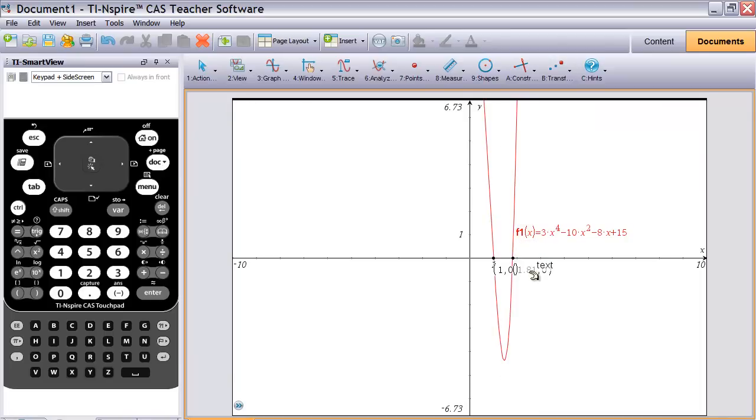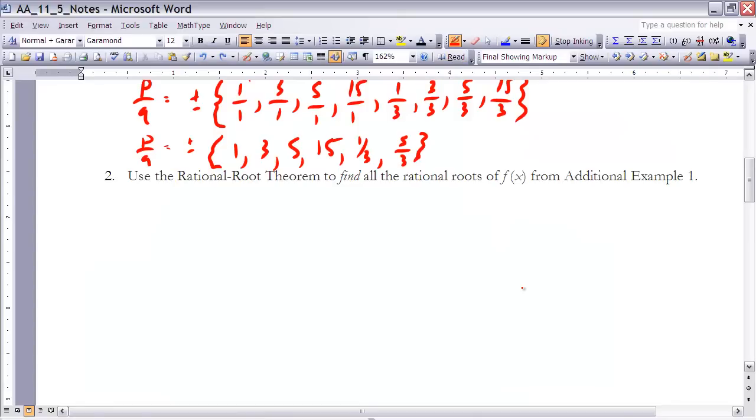Well, 1.81 is not on that list. And what that tells me is that 1.81 is actually an irrational number. And although it's a zero of the function, it's not a rational zero of the function. So the only rational zero, although I had that long list of possible ones, the only actual rational zero is at 1. Therefore, I'm going to write over here x equals 1 would be my only solution.